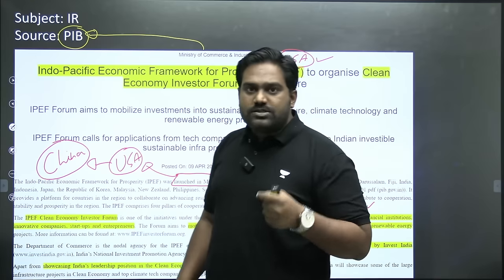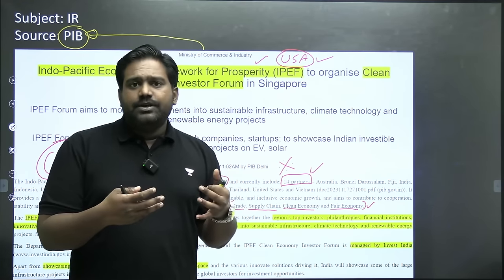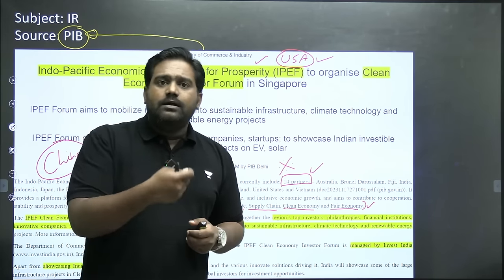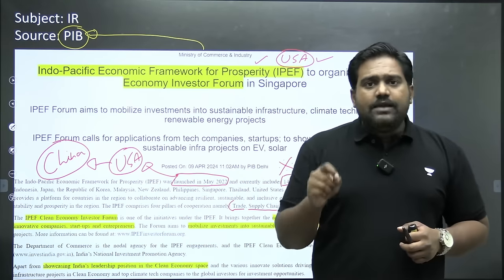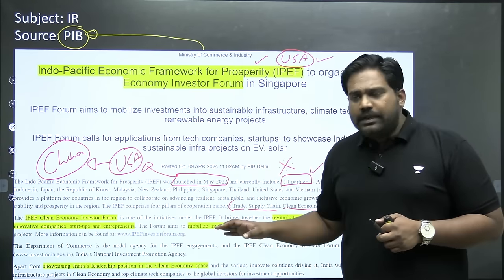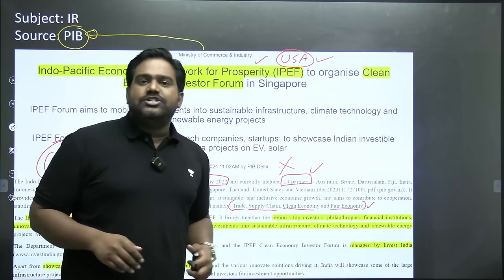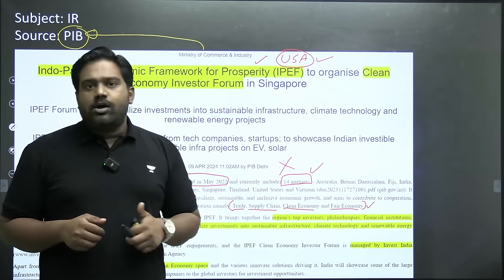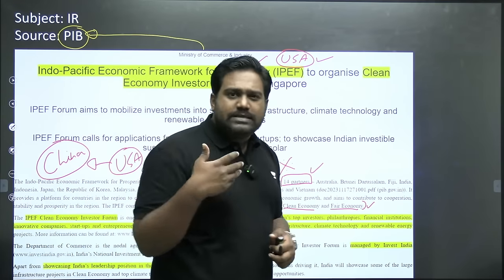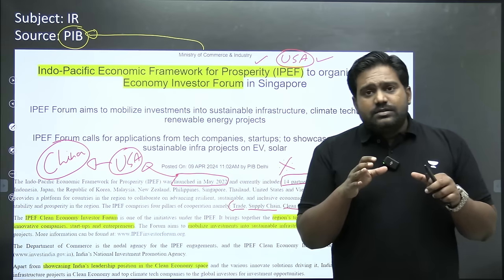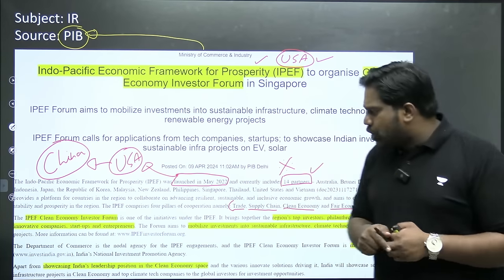Under these four pillars, countries will work together to learn from each other, align their policies and regulations, and facilitate better economic and trade opportunities. The best part about the framework is that a member country can opt for only some of the pillars. India, for instance, is not comfortable joining all four pillars — India has joined supply chain resilience, clean economy, and fair economy, but not the trade pillar.